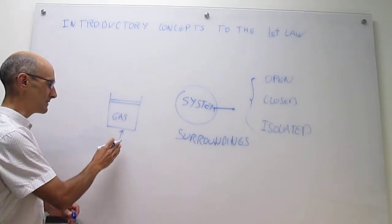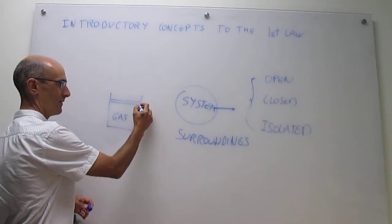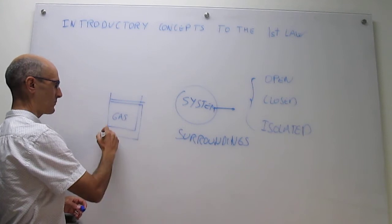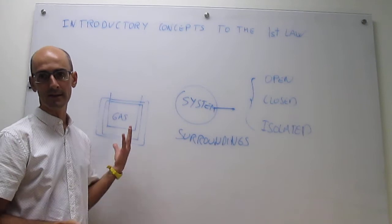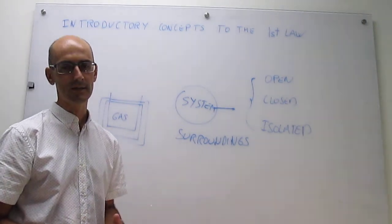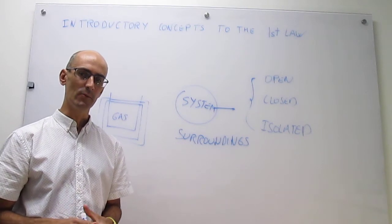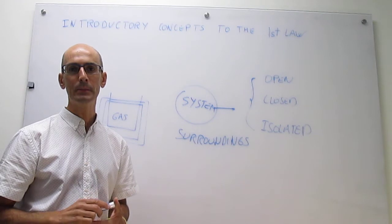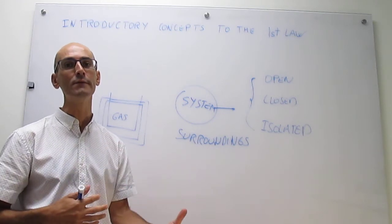Now, in an isolated system, what you actually would have is that there's neither mass exchange nor energy exchange with the surroundings. So the idea would be to thermally insulate this closed system to make it isolated. Now, isolated systems do not exist in reality because it's impossible to keep energy from being exchanged between systems and surroundings for an infinite amount of time.